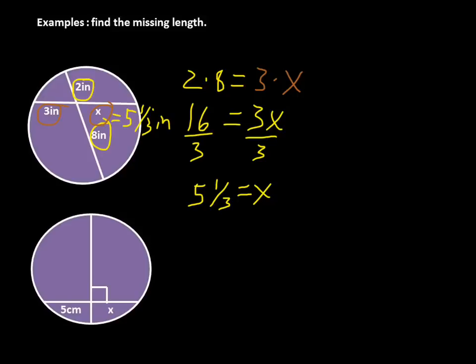In the next example, we have a diameter that is perpendicular to a chord, with five centimeters marked on one half. Because the diameter is perpendicular to the chord, it bisects it — so both halves are equal. Therefore x simply equals five centimeters. No big deal.